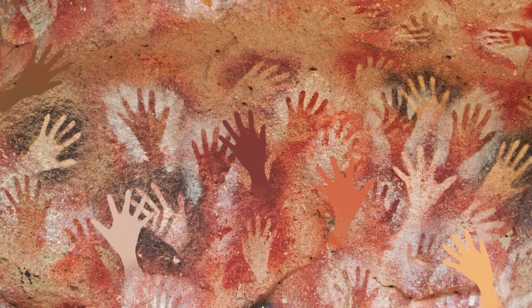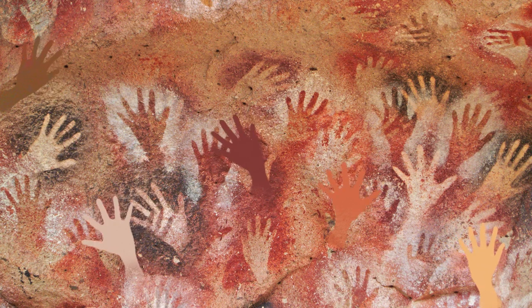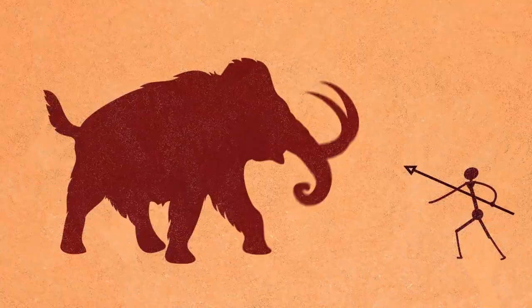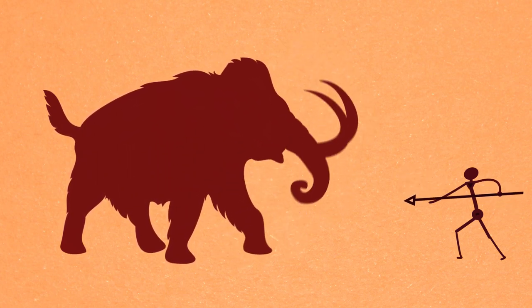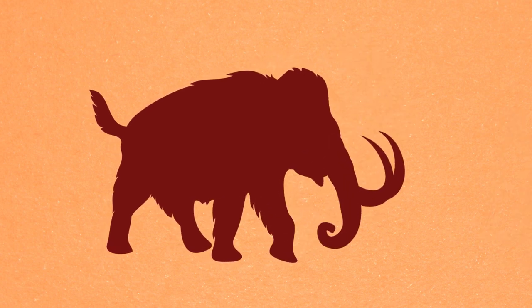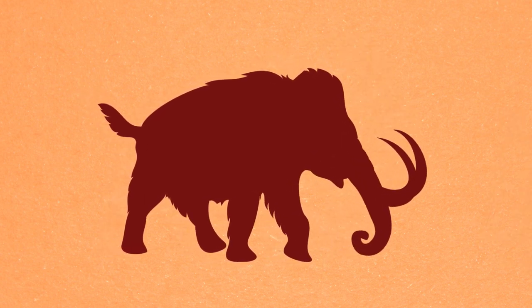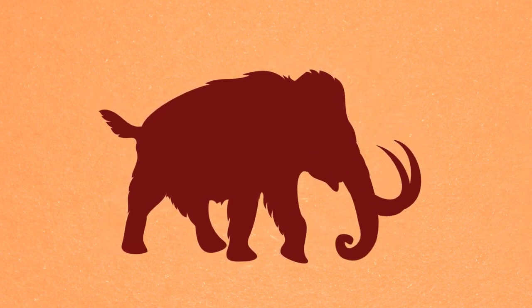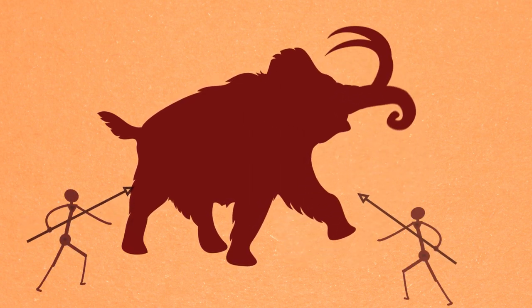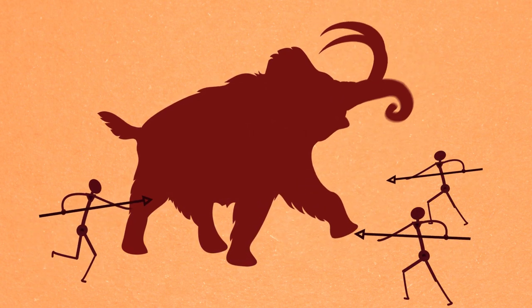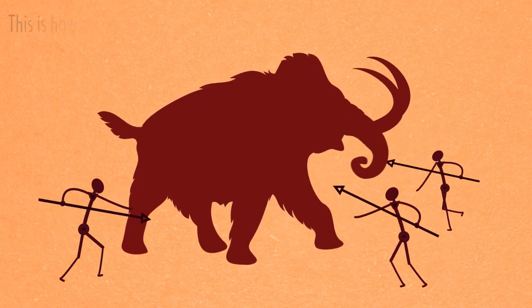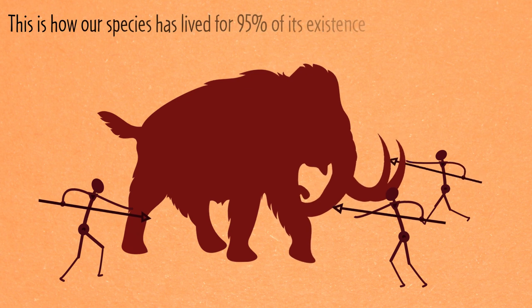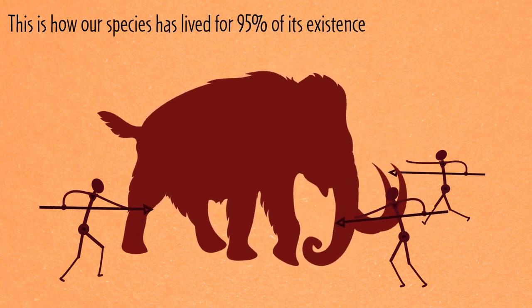Out of necessity, they created deep bonds with others to maximize their chances of survival. Let's face it, a human being on its own isn't a very impressive animal. We aren't as strong or as fast as other animals. Nor do we have any natural weapons at our disposal like claws or big sharp teeth. But put a bunch of us together with collectively made weapons and we can take down the biggest mammoth. This is how we, as a species, have lived for 95% of our existence.